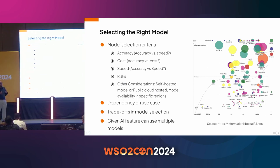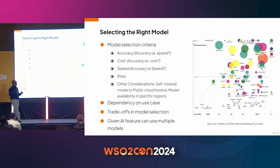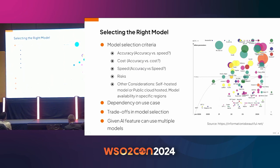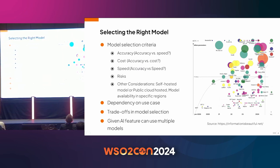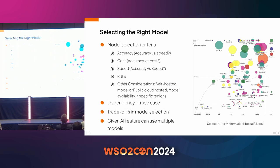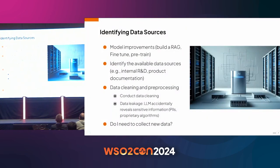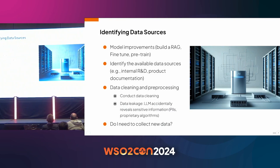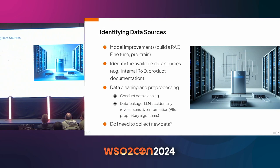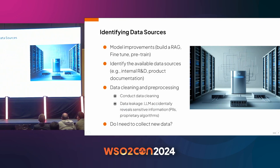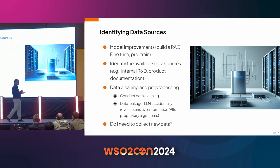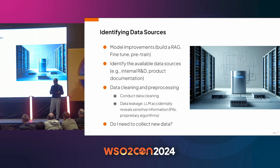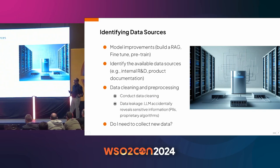One thing to point out is that a given feature does not need to use the same model. For example, in Choreo Copilot we use multiple models depending on the area being dealt with. Once you have the model, sometimes you will directly connect via an API call — but usually general models for certain use cases are not good enough, so people go and build RAGs.